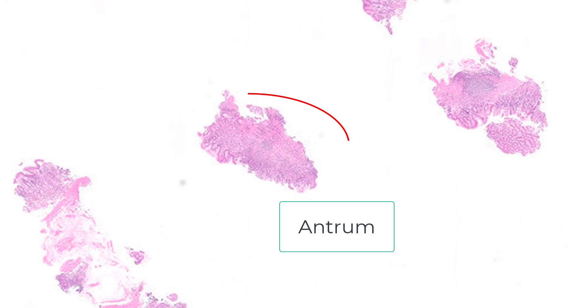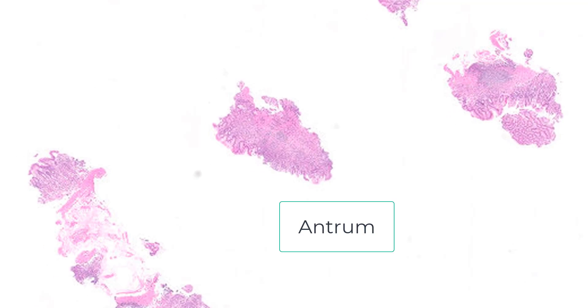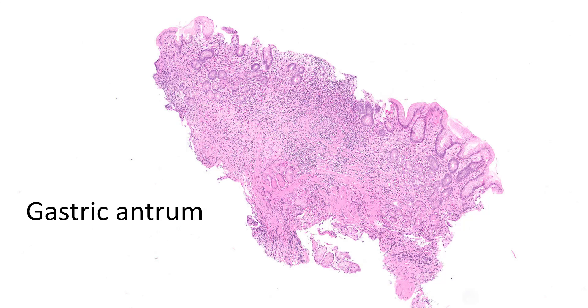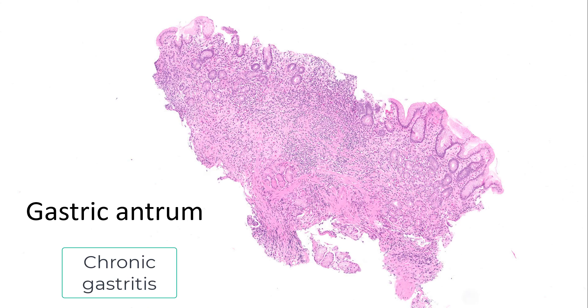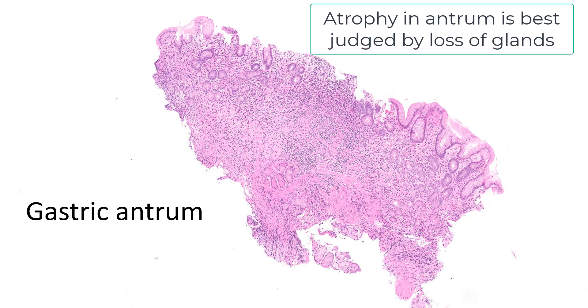Just a few brief words on the differential diagnosis of autoimmune gastritis. I'm going to use this 67-year-old man to illustrate this point. As is often the case, your endoscopist will throw multiple fragments all into one cassette, and it's for you to sift out which is body and which is antrum. This is antrum and this fragment is body. Here's the antrum — I know this is antrum because of my gastrin stain. Notice these gastrin-positive cells. There's clearly chronic gastritis, and this isn't mild — this is significant chronic gastritis.